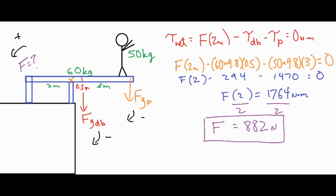So we went ahead and found each of our values for the torque by doing the force of gravity mg, mass times 9.8, times the lever arm. So here is the diving board, 60 times 9.8 times that 0.5 that we found earlier in red. And then for the person they are 50 kilograms so their mg is 50 times 9.8 times 3.